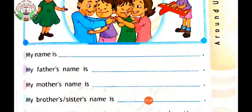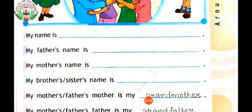The very first question is: my name is dash. Children, you have to write your name in the blank given here. The next question is: my father's name is dash — you have to write your father's name here. The next question is: my mother's name is dash — you have to write your mother's name here.